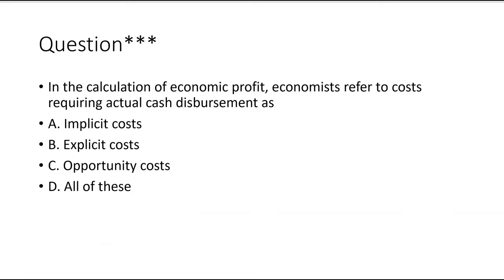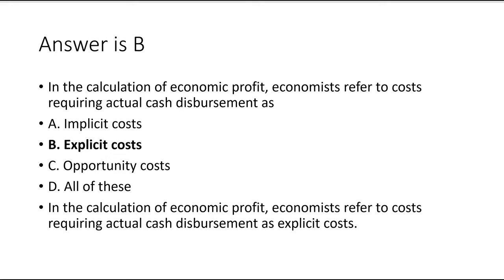Practice question: In the calculation of economic profit, economists refer to costs requiring actual cash disbursement as what? Those costs are explicit costs. We take explicit costs from revenue to arrive at accounting profit. If we include implicit costs as well, that's all economic costs, and subtracting all economic costs from revenue gives economic profit. The answer is B — explicit costs.